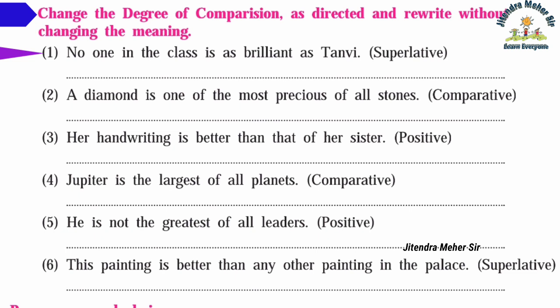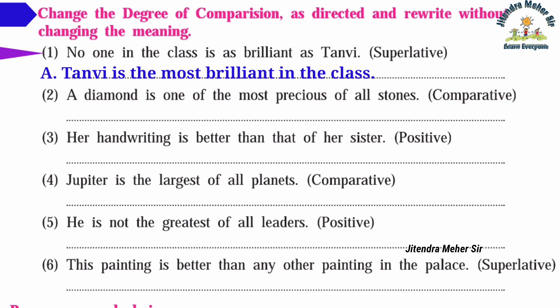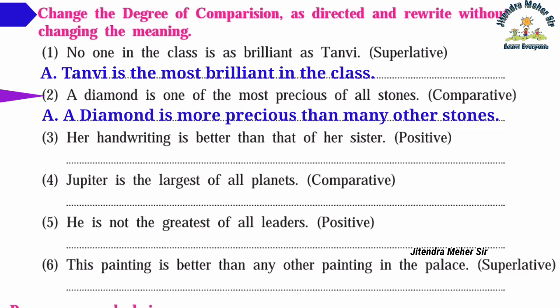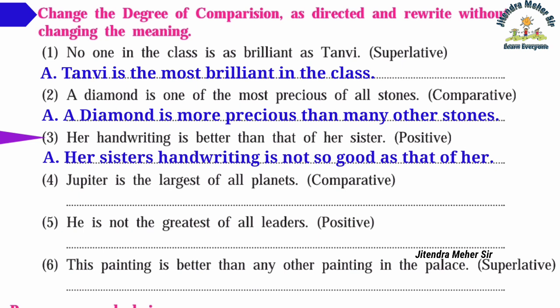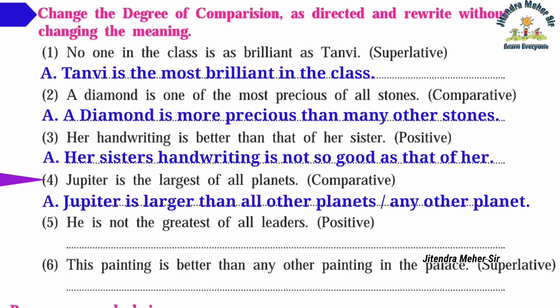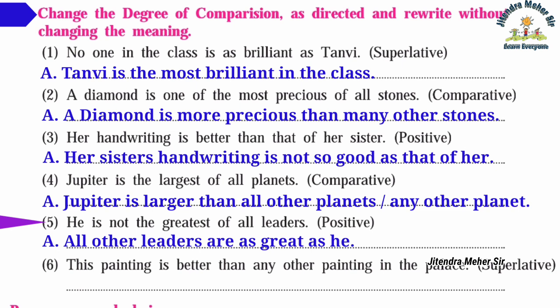Answers: (1) 'No one in the class is as brilliant as Thunwi' — superlative: Thunwi is the most brilliant in the class. (2) 'A diamond is one of the most precious of all stones' — comparative: A diamond is more precious than many other stones. (3) 'Her handwriting is better than that of her sister' — positive: Her sister's handwriting is not so good as hers. (4) 'Jupiter is the largest of all planets' — comparative: Jupiter is larger than all other planets. (5) 'He is not the greatest of all leaders' — positive: Some leaders are as great as he. (6) 'This painting is better than any other painting in the palace' — superlative: This is the best painting in the palace.